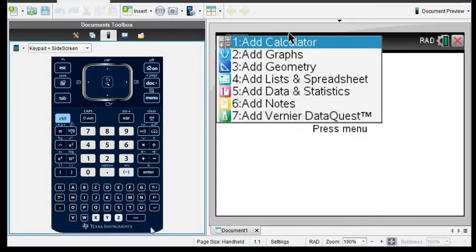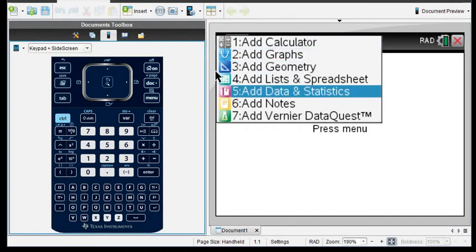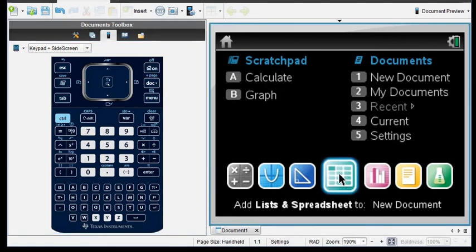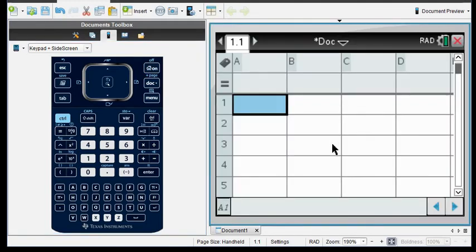If I grab my graphing calculator, you can either start from the home screen or start a new document, or you can just come down here to the list and spreadsheet screen. I'm going to type in X and Y, and then we're going to put our data sets in down below.